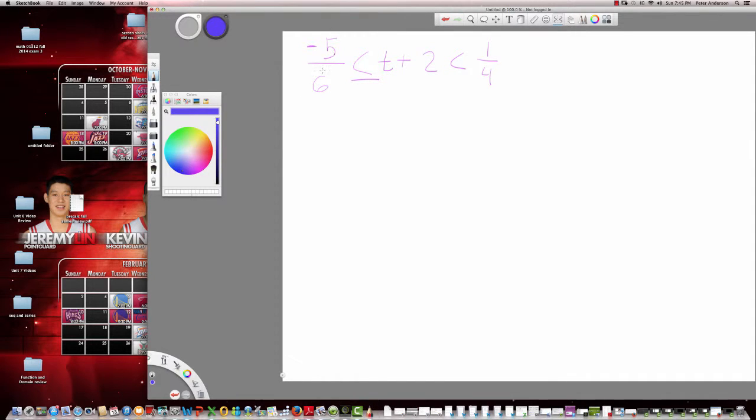Alright, let's take a look at -5/6 ≤ t + 2 ≤ 1/4, and let's go through and figure out how to solve this.